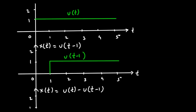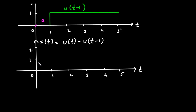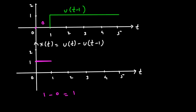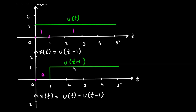So we have to subtract u of t minus u of t minus 1. From t equals 0 to t equals 1, the amplitude of u of t is 1 and the amplitude of u of t minus 1 is 0. So 1 minus 0 equals 1 — the amplitude will be 1 up to this point. From t equals 1 onwards, both amplitudes are 1, so 1 minus 1 equals 0.